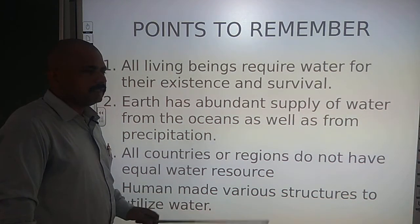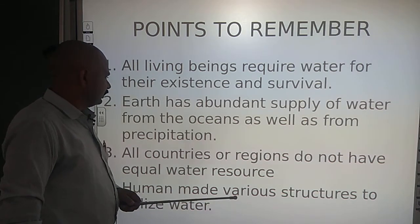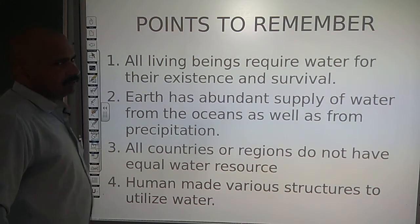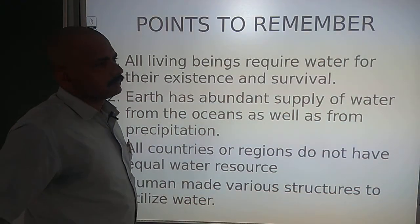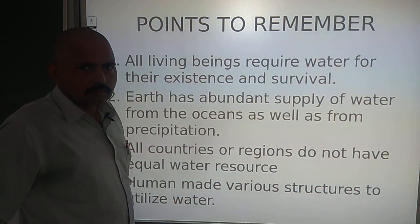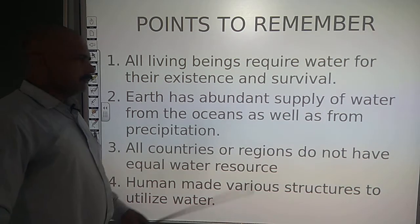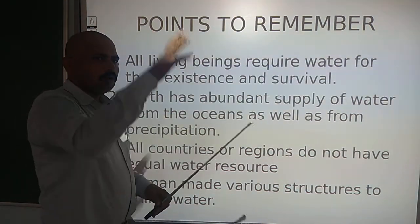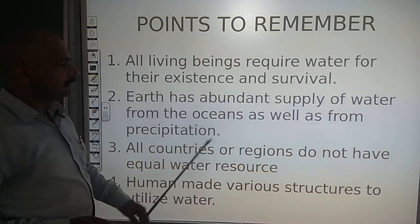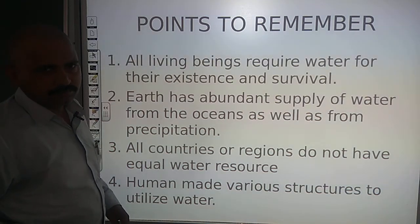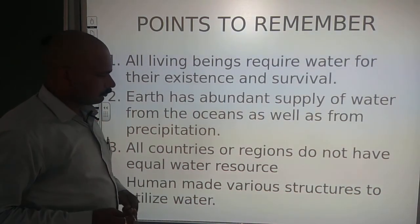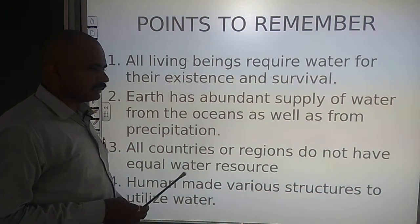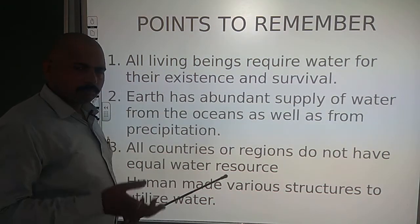The same applies to all plants and creatures, leaving aside some creatures of arid regions. The second important point is that earth has an abundant supply of water from the oceans as well as from precipitation. Three-fourths of the earth is covered with ocean, and precipitation is the primary source of water, providing water to all regions. However, all countries and regions do not have equal water resources — some face extreme water scarcity while others have problems due to excess water, making proper water management essential.